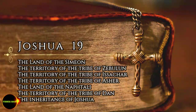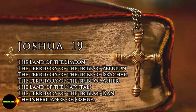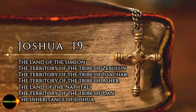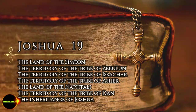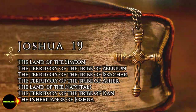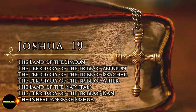It included Beersheba, or Sheba, Moladah, Hazer-Shul, Bela, Ezem, El-Tolad, Bethel, Horma, Ziklag, Beth-Markaboth, Hazer-Susa, Beth-Lebaeth, and Sharuam — 13 towns in their villages.